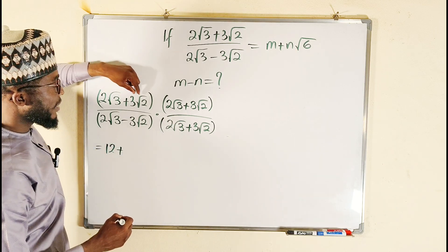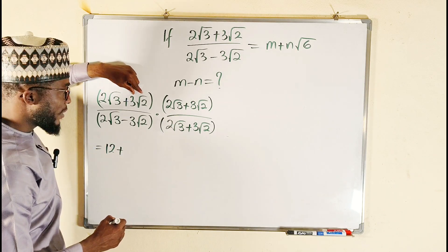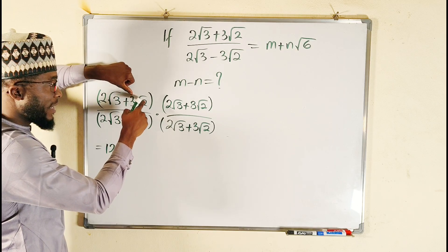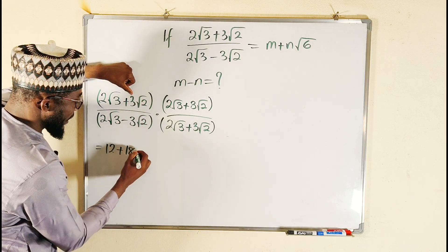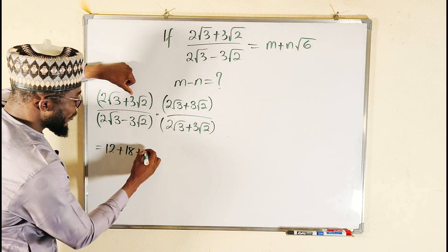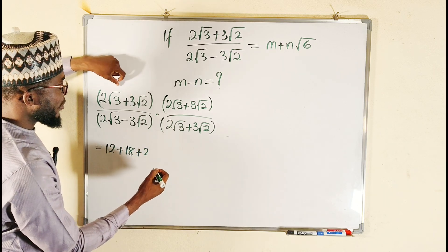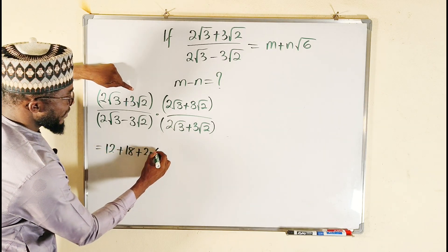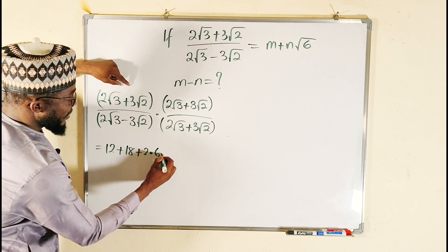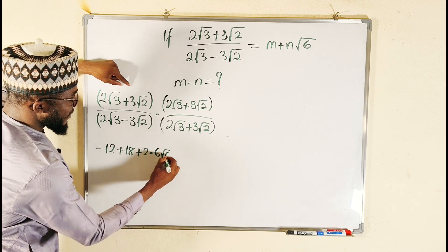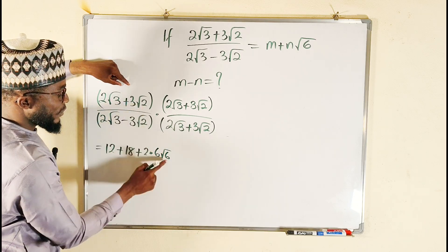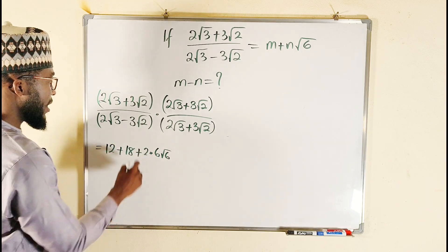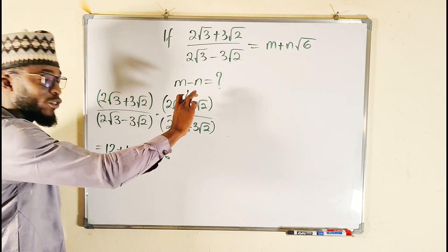Then plus the second term squared: 3 squared is 9, and 9 times 2 is 18. Then plus 2 multiplied by the first term multiplied by the second term: 2 times 3 is 6, giving us 12√6, because √3 times √2 is √6. That's what we have on top.